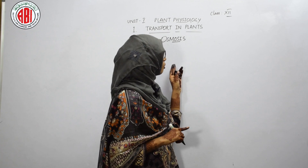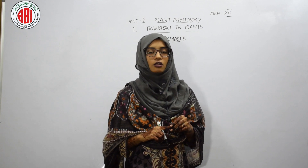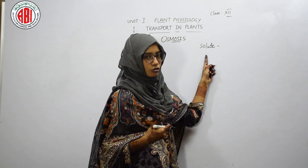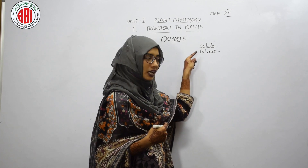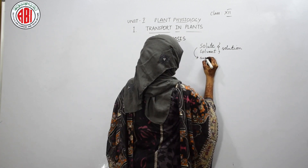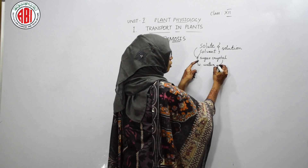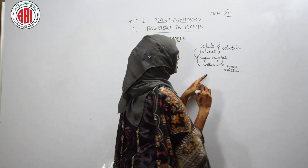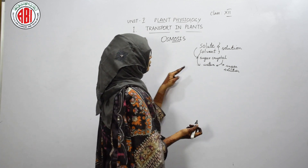In the last class we discussed about diffusion, which shows the movement of solute particles. But here, the process osmosis is about the movement of solvent particles. So let us recall the terms: solute, solvent, and solution. Solute is a substance which gets dissolved. Solvent is any liquid which dissolves the solute. Solute plus solvent is called a solution. For example, sugar crystals are solute particles and water is the solvent. When we add sugar crystals to water, they dissolve and form a sugar solution.